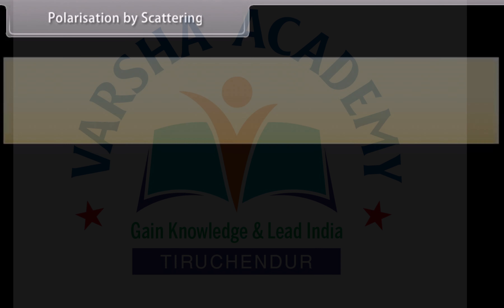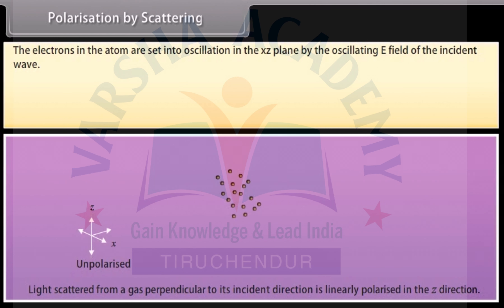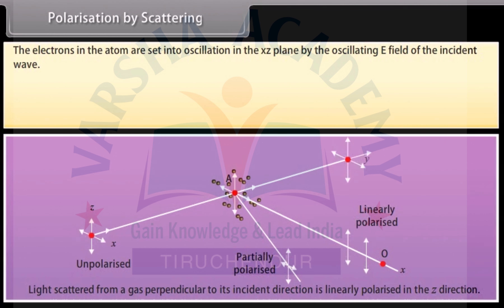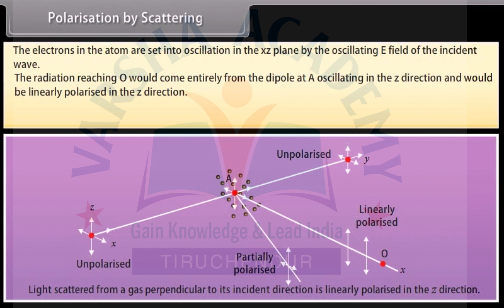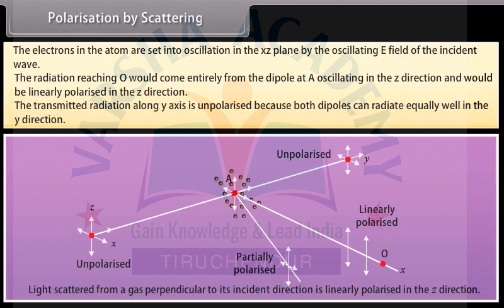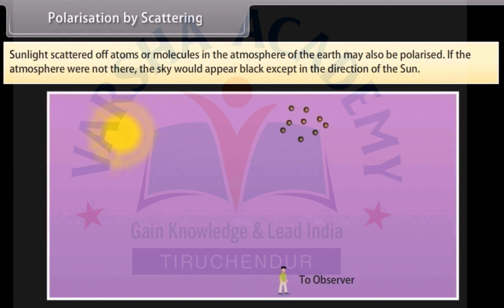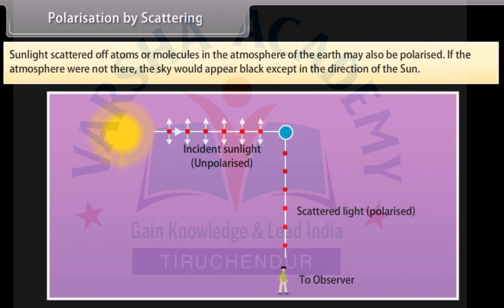Polarization by scattering. Consider unpolarized light traveling along the y-axis striking a gas atom at A. The electrons in the atom are set into oscillation in the x-z plane by the oscillating electric field of the incident wave. The radiation reaching O would come entirely from the dipole at A oscillating in the z-direction and would be linearly polarized in the z-direction. The transmitted radiation along the y-axis is unpolarized because both dipoles can radiate equally well in the y-direction. Sunlight scattered off atoms or molecules in the atmosphere of the earth may also be polarized. If the atmosphere were not there, the sky would appear black except in the direction of the sun.